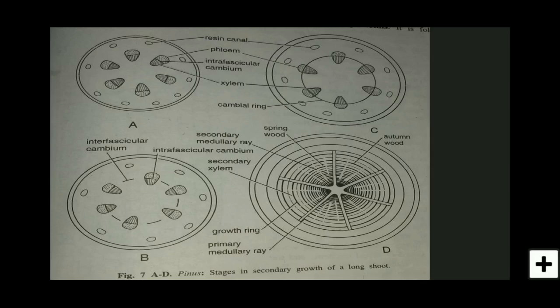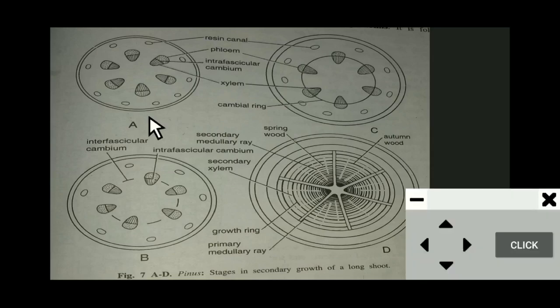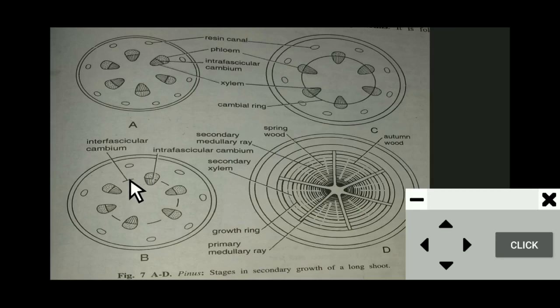In the first stage of secondary growth, a strip of cambium called the interfascicular cambium is formed. The interfascicular cambium is the cambium formed between the vascular bundles.